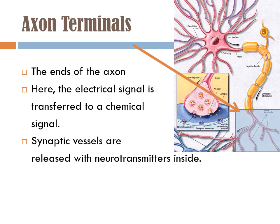When that signal gets converted from electrical to chemical, those synaptic vesicles will fuse with the cell membrane and release their contents out of the axon terminal and into the synapse — which is the gap between the dendrites of one neuron and the axon terminal of another. Those neurotransmitters that get released go and stimulate the dendrites on the next neuron, sending the signal down the chain.